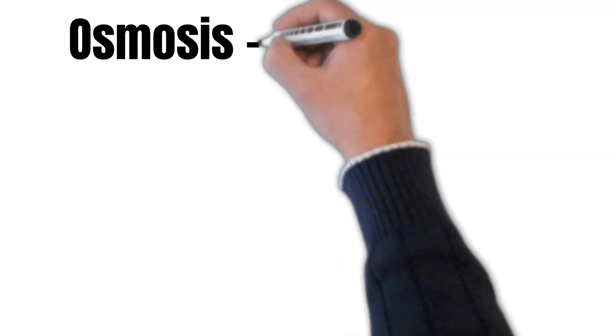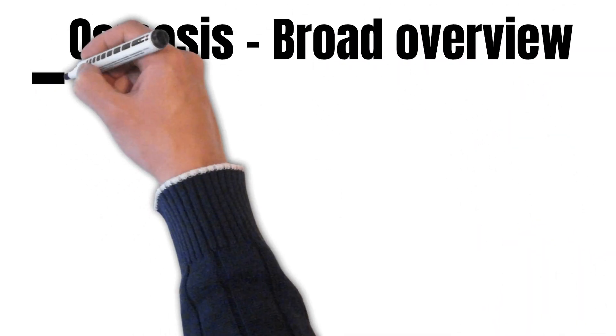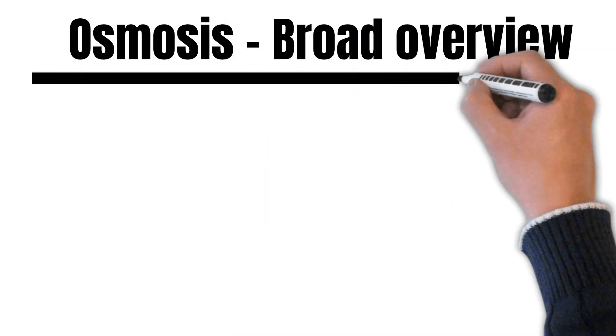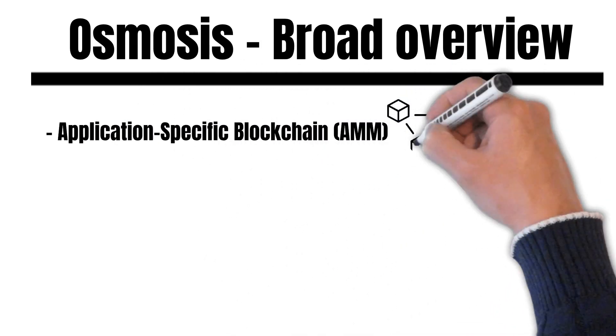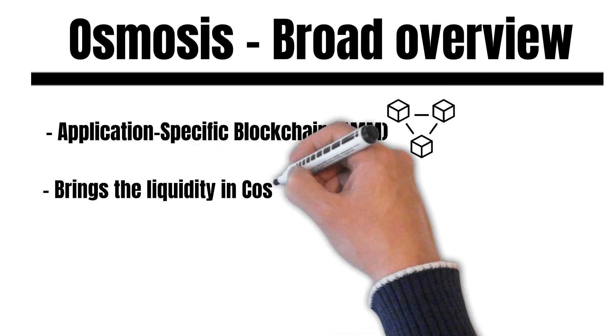Now let us bring everything together to get a first broad overview of Osmosis. In a nutshell, Osmosis decided to have its own customized blockchain to concentrate its liquidity. On Osmosis, people can swap tokens and provide liquidity.